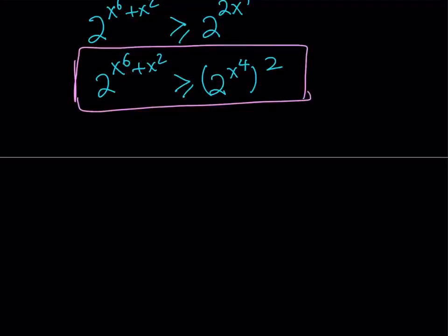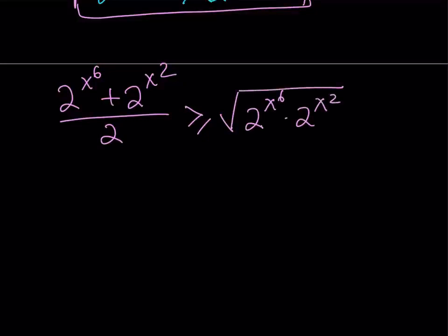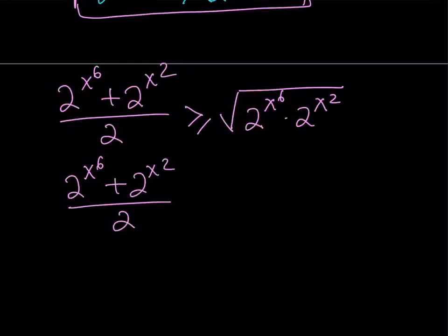Now let's apply the AM-GM inequality one more time, this time to the two terms 2 to the x to the sixth and 2 to the x squared. So 2 to the x to the sixth plus 2 to the x squared, divided by two — their arithmetic mean — needs to be greater than or equal to their geometric mean, which is the square root of their product. Since we're multiplying two powers with the same base 2, we can just add the exponents.